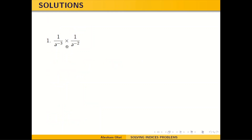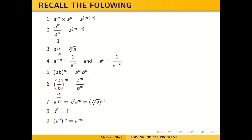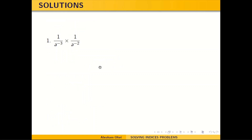The first problem is this. Now, what does this show you? If you have 1 over a to the negative 3, recall that 1 over a to the negative n is the same as a to the positive n. So you can say that 1 over 8 to the negative 3 is the same as 8 to the power 3, and 1 over 8 to the negative 2 is the same as 8 to the power 2. So in solving, this side gives me 8 to the power 3 and this side gives me 8 to the power 2.